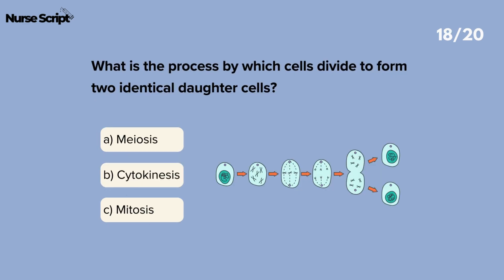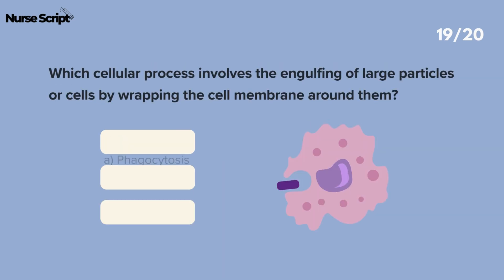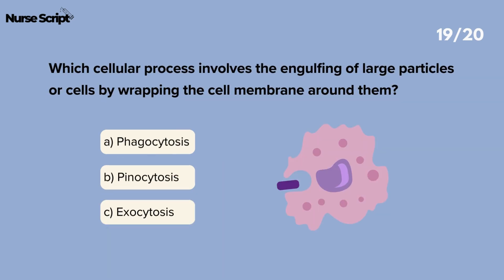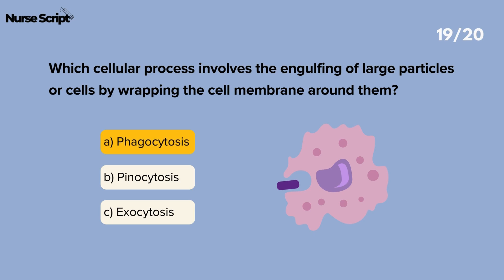What is the process by which cells divide to form two identical daughter cells? Mitosis. Which cellular process involves the engulfing of large particles or cells by wrapping the cell membrane around them? Phagocytosis.